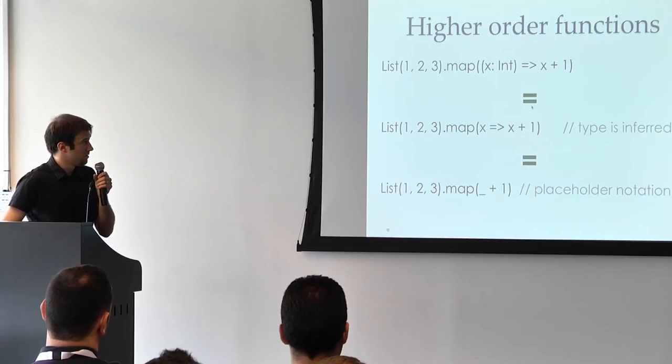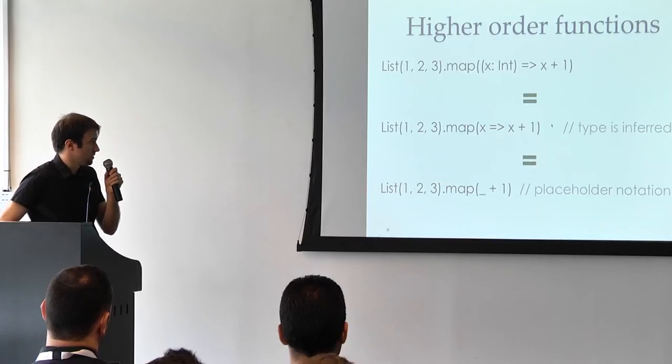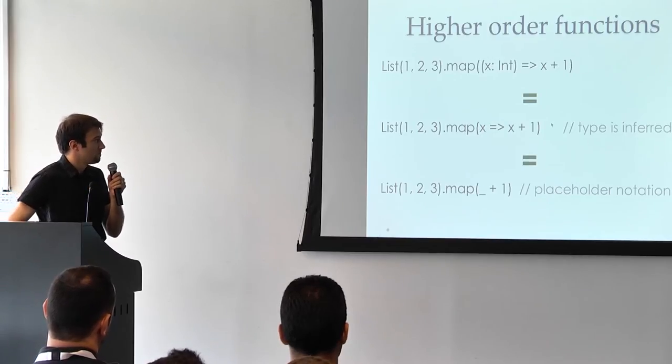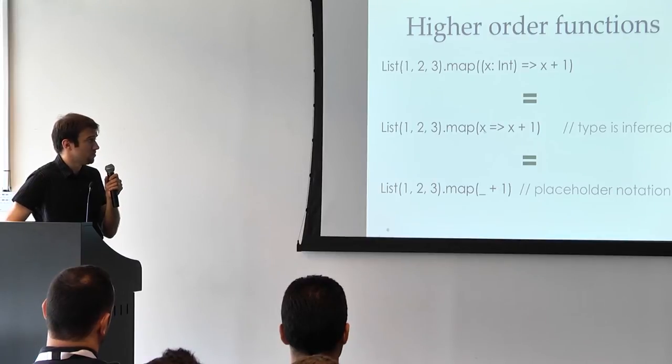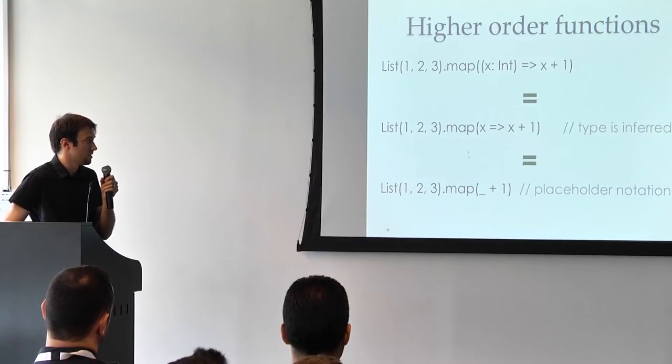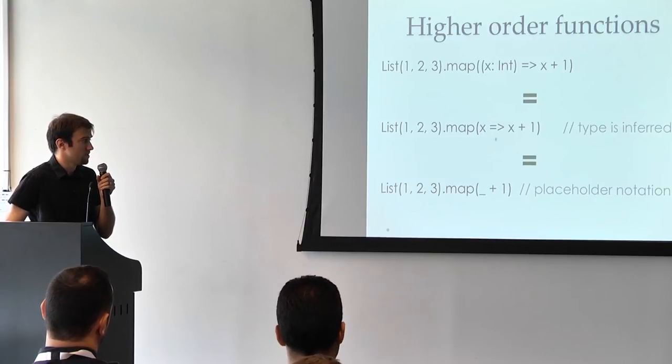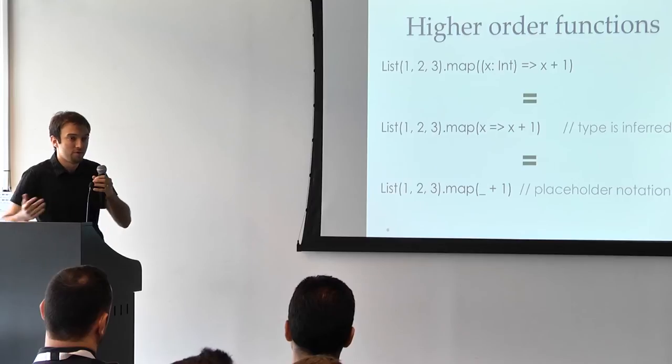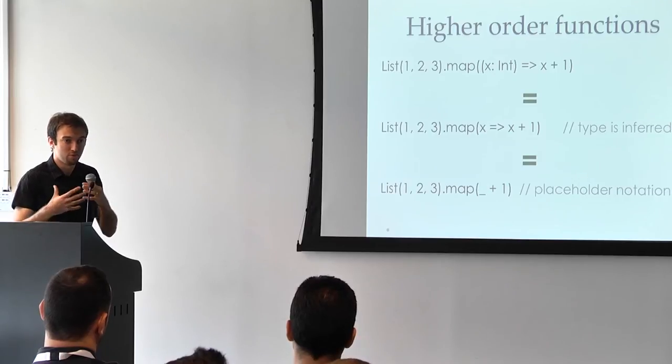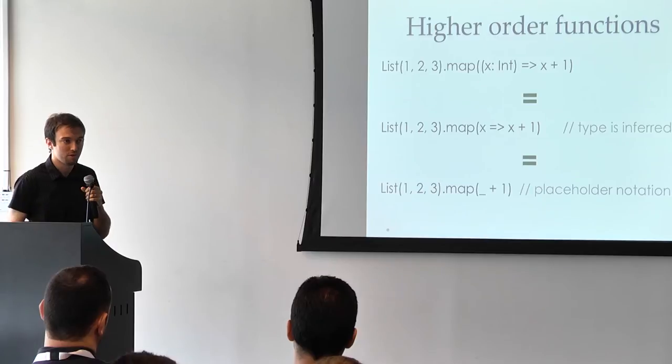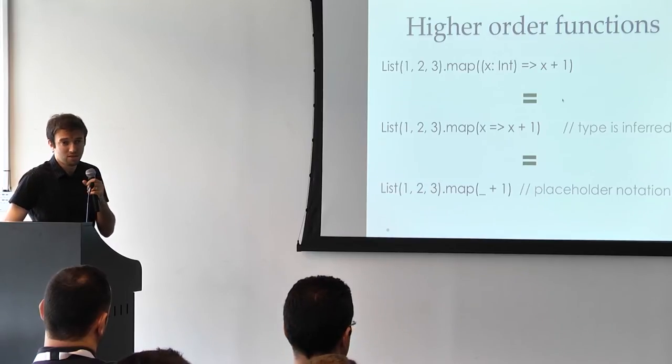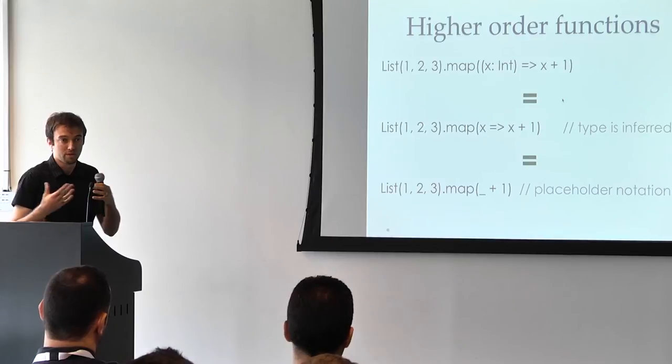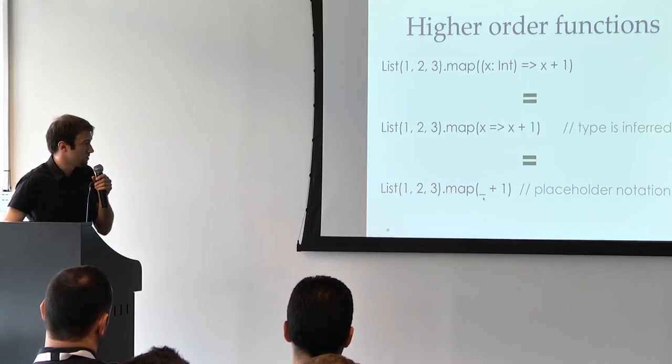We have a lot of sugar in Scala to make this easier, because these are very ubiquitous and frequently used. So we do not need to specify the type since we have type inference. And also we have a placeholder notation that basically means that if we use a variable just one time, maybe it's too much of an order to give it a name. And we are actually polluting the code by thinking about a name and giving it a name. In other cases, it's actually useful because it helps us to document the code. But you can use your judgment here.